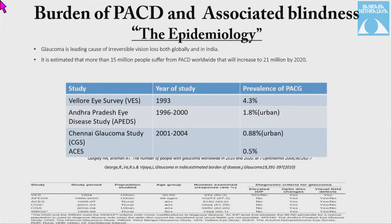Glaucoma is a leading cause of irreversible vision loss both globally and in India. It has been estimated that more than 15 million people suffer from primary angle closure disease worldwide, projected to increase to 21 million by 2020 per Quigley et al. In India, the well-urbanized survey of 1993 showed prevalence of PACG at 4.3% in urban areas. The Andhra Pradesh eye disease study (1996–2000) showed 1.8%, and the Chennai glaucoma study (2001–2004) showed 0.88% in urban settings.